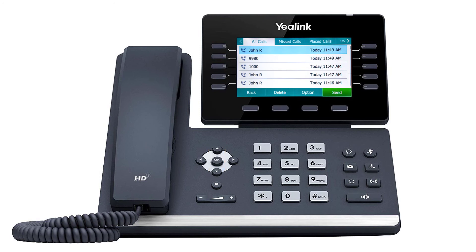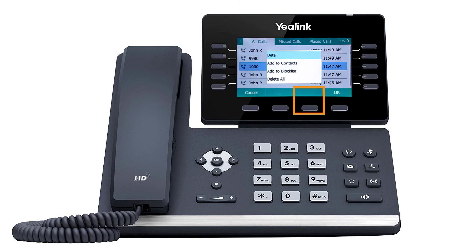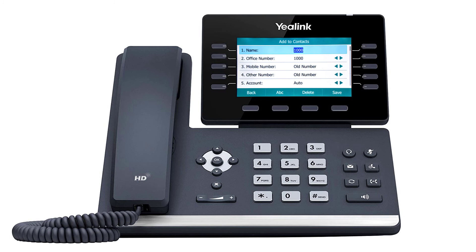You can also add a history call as a contact. Select the call with the arrow keys and select the option soft key, then select add to contact and press the OK soft key. Edit the name, add any additional numbers, and press the save soft key.